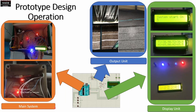In the main system, we have the circuitry connection, and this is the condition whereby the relay is on, based on the indicator in a given situation. In the output unit, we can see that water is being sprayed when the system detects high temperature and low humidity. We have the display unit with several LEDs indicating the temperature and humidity at the current particular time.